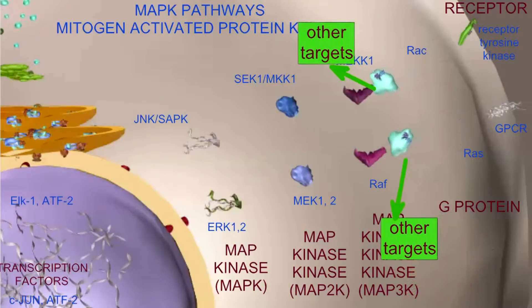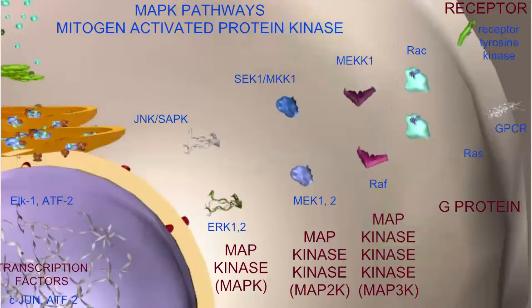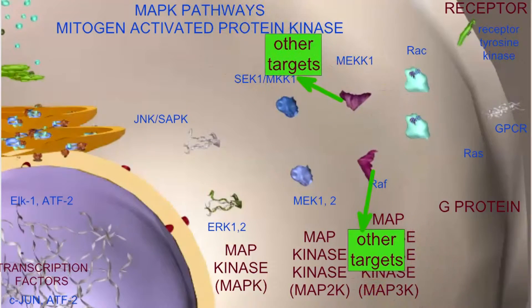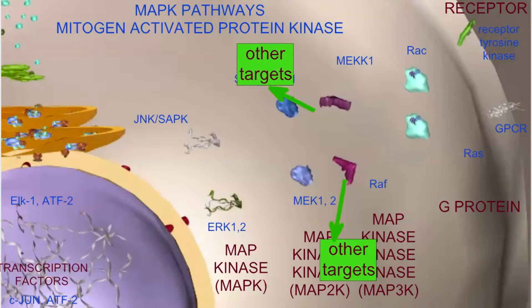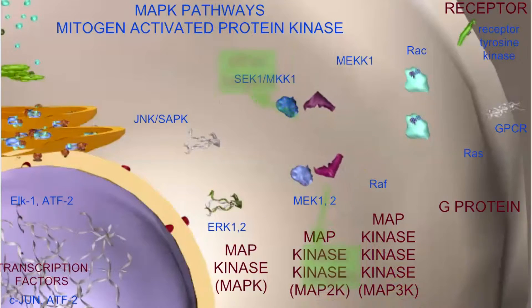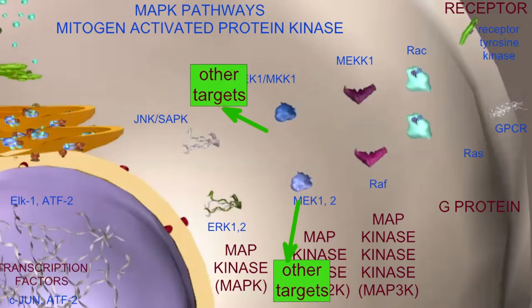Many of these effectors can be serine or tyrosine kinases, which then can phosphorylate multiple targets, each of which can have distinct effectors of its own.